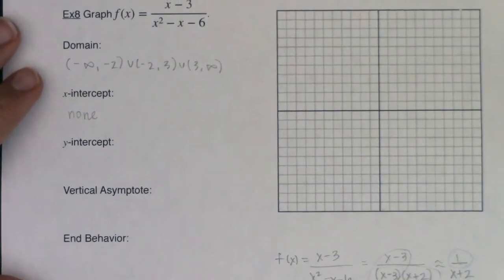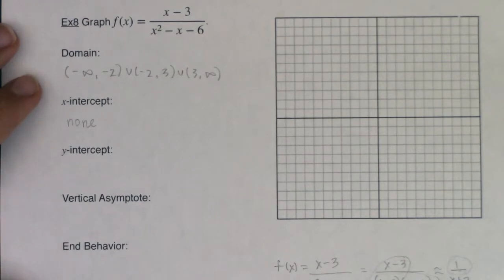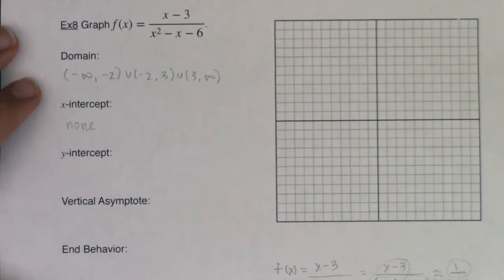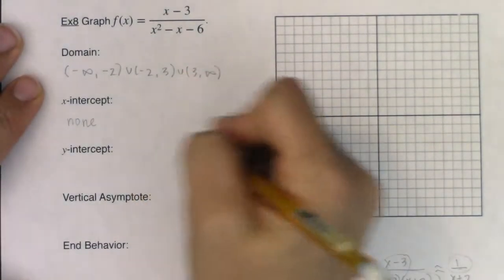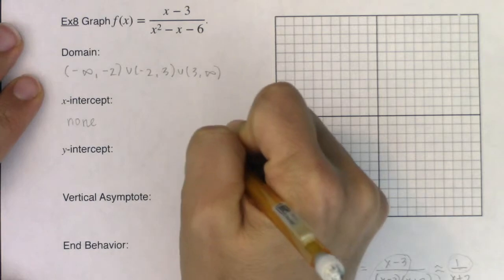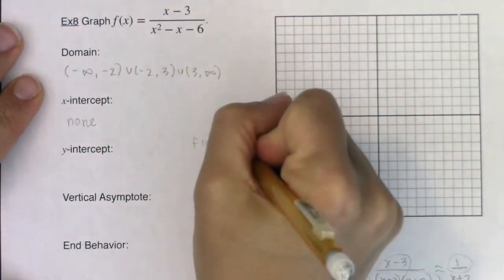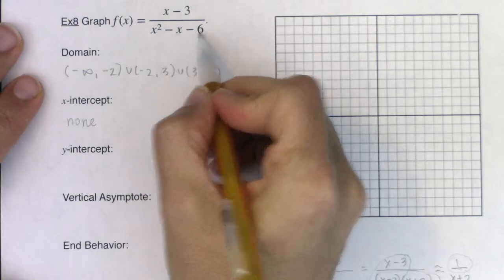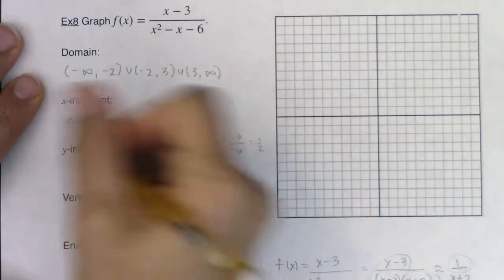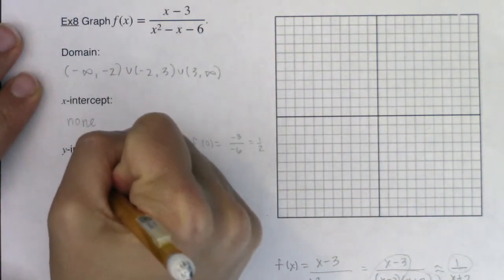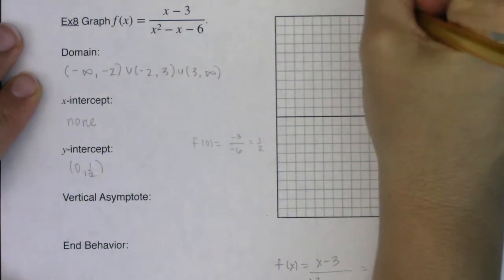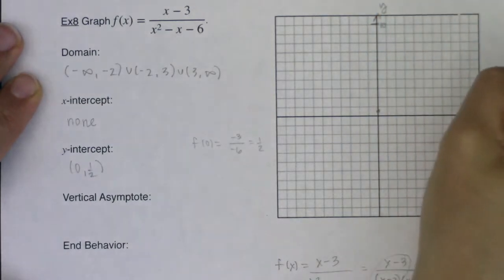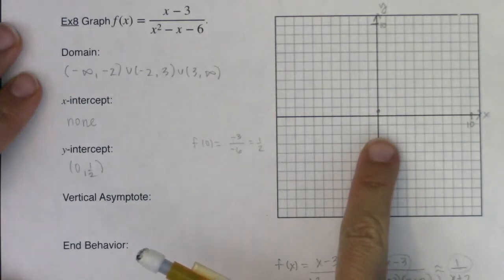For a y-intercept we find it by letting x equal zero. So f(0) would be (0 minus 3) on the numerator, and on the denominator (0 minus 3)(0 plus 2) gives negative 6, so I'd have negative 3 over negative 6. That gives a y-intercept of (0, 1/2). Let me label and scale my axes and draw that in.